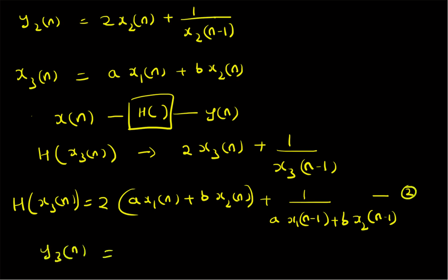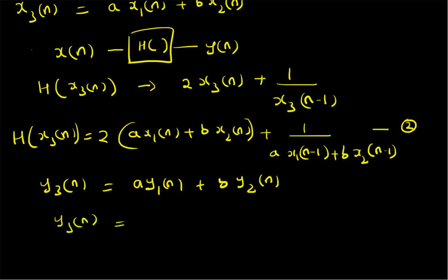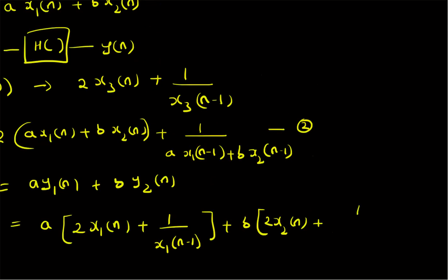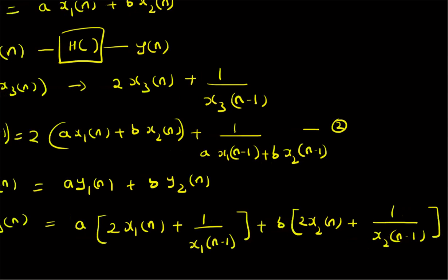Now let us define a new output y3(n) which is a linear combination of y1(n) and y2(n). Recall that y1(n) is the output when x1(n) is the input, and y2(n) is the output when x2(n) is the input. So y3(n) can be written as a times (2·x1(n) + 1/x1(n-1)) plus b times (2·x2(n) + 1/x2(n-1)), which is the linear combination of y1(n) and y2(n).